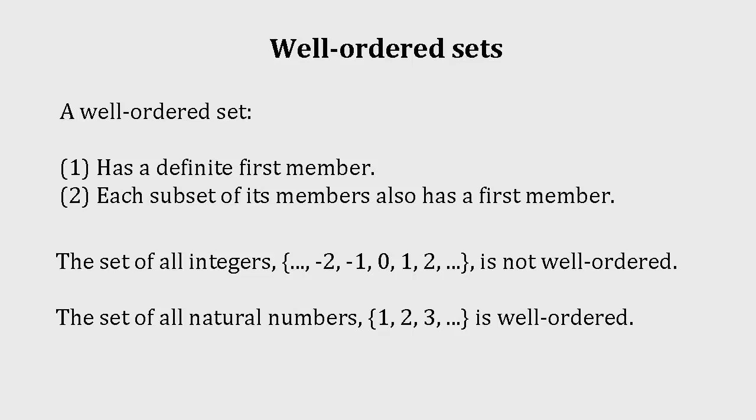The set of all integers, on the other hand, which includes all negative whole numbers as well as all positive ones, {..., -2, -1, 0, 1, 2, ...}, isn't well-ordered because there's no first member.